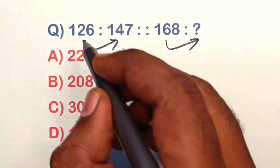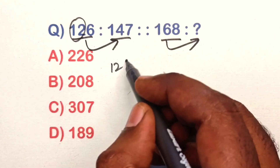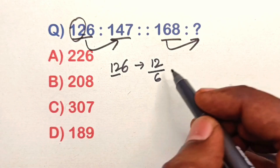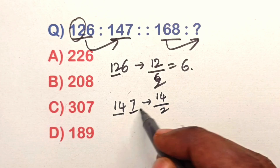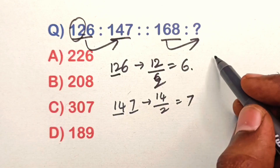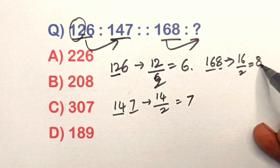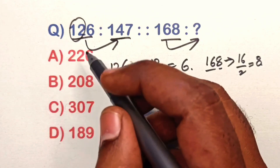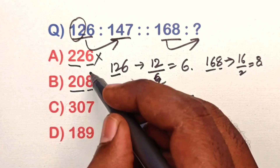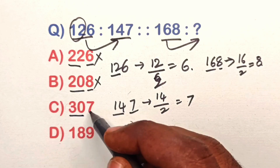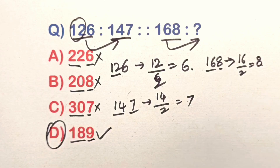Find the relation in this analogy question. Take 126: half of 12 is 6. Take 147: half of 14 is 7. Take 168: half of 16 is 8. Check the options: 22 — half is 11, but it shows 6, wrong. 20 — half is 10, but it shows 8, wrong. 30 — half is 15, but it shows 7, wrong. 18 — half of 18 is 9, which is correct. Option D is the correct answer.